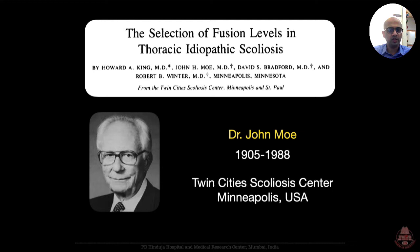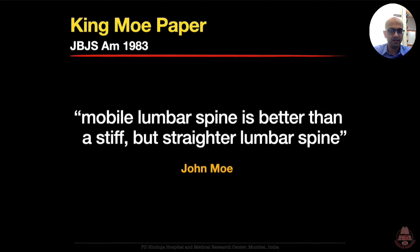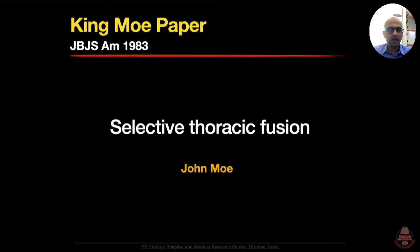Dr. John Moore, whom Dr. Harrington called the father of modern scoliosis surgery, had developed treatment guidelines for treating AIS patients. His fellow Howard King was given the project of retrospectively reviewing all the cases treated at the Twin Cities Scoliosis Centre using Moore's guidelines. For 25 years, John Moore taught the principle that the mobile lumbar spine is better than a stiff and a straighter one.